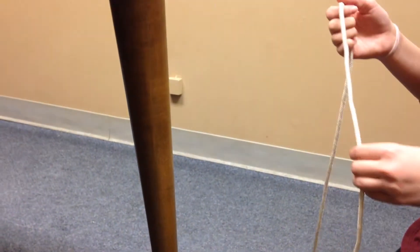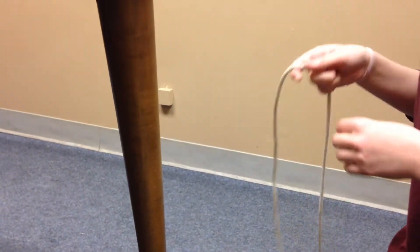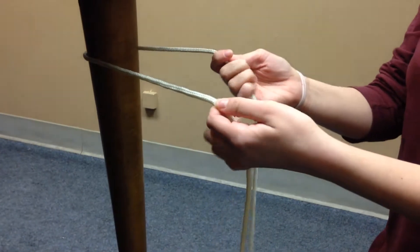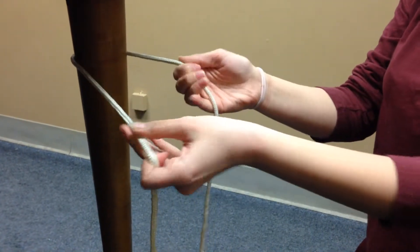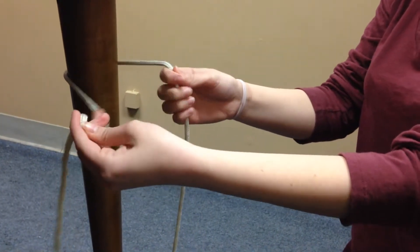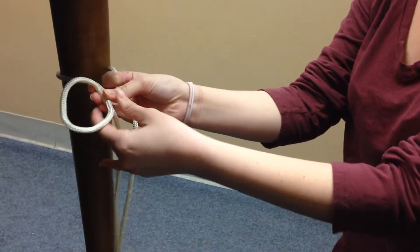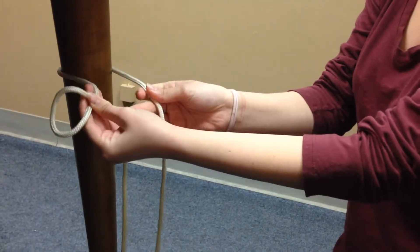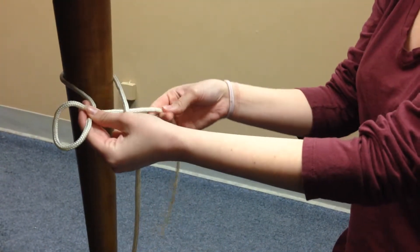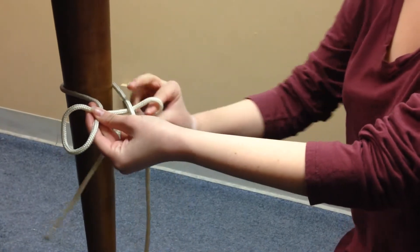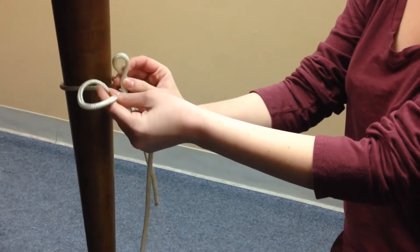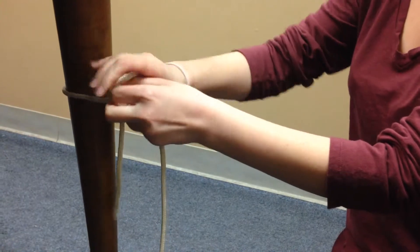So to tie a quick release knot, first you will bring the rope behind what you're going to tie it to, and then you're going to take the rope on your left and make a loop just like that, and then go behind the string on the right. And then you will take the end that you're holding and bring it through the original loop and pull tight.